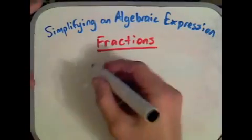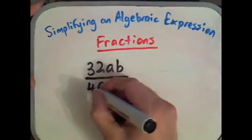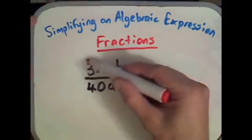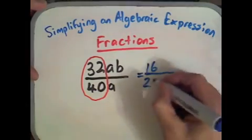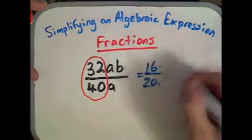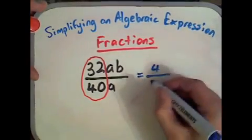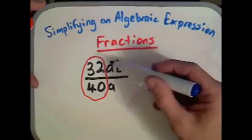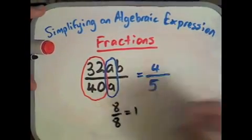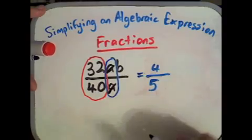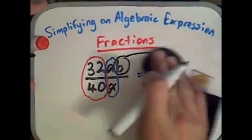Let's look at 32ab divided by 40a. Simplify 32 over 40: halve to get 16 over 20, halve again to get 8 over 10, halve again to get 4 over 5 — that's as far as we can go. Now look at a over a: a divided by a equals 1, just like 10 divided by 10 is 1. So the a's cancel out, leaving b on top. The answer is 4b over 5.